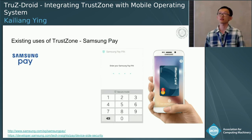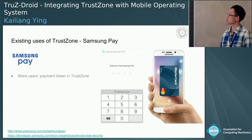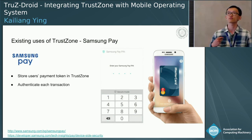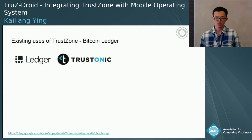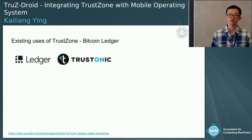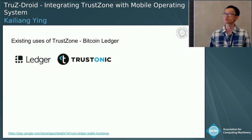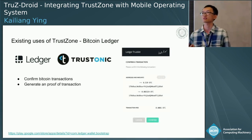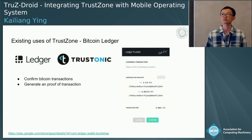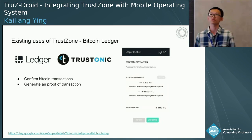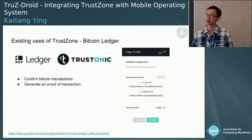To briefly introduce some existing work using TrustZone: one representative example is Samsung Pay, where they secured the user payment token inside TrustZone, and every time you need to make a payment they must authorize inside the secure world before the payment happens. Another work is Bitcoin Ledger, where they worked with a TEE vendor to build a Bitcoin transaction confirmation inside the secure world, meaning every time a transaction happens TrustZone generates a proof of the transaction and sends it to the Bitcoin ledger server.